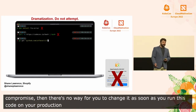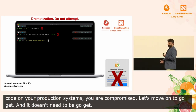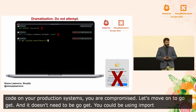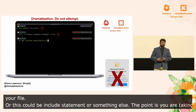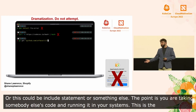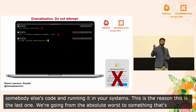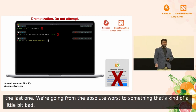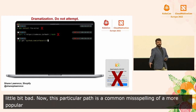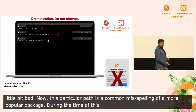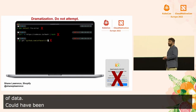So let's move on to go get. It actually doesn't need to be go get — you could be using import at the top of your go file, or if you're using another language, this could be an include statement or something else altogether. The point is you're taking somebody else's code and you're running it in your systems. There's a reason that this is the last one, because we're going from the absolute worst — the toolbar — to something that's just potentially kind of a little bit bad. This particular path is a common misspelling of a more popular package, and during the time that this attack was happening, if you had used this, it would have exfiltrated a bunch of your data. But even if you pin to a hash, you vendor every dependency, you could have been compromised at the first pull or any subsequent upgrade.